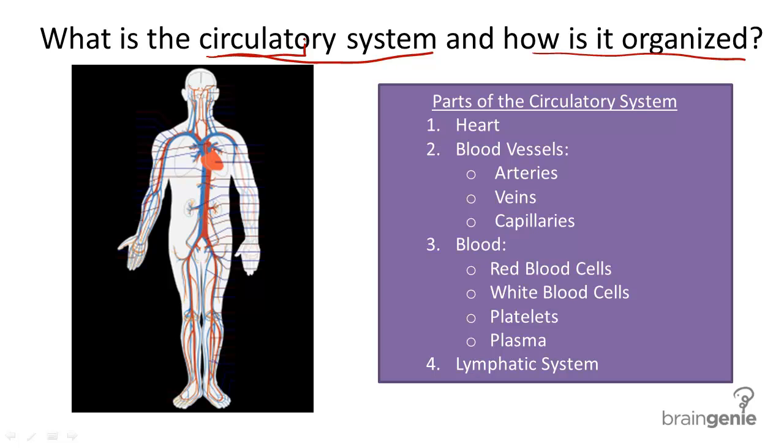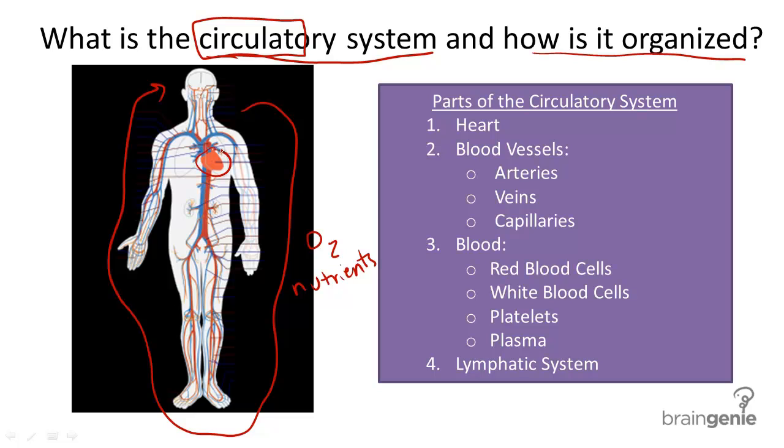Well, when you think of the circulatory system, think of the word circulate. The circulatory system transports valuable oxygen and nutrients around the body for use by all cells. It's sort of like a river transport system with a very strong pump in the center.